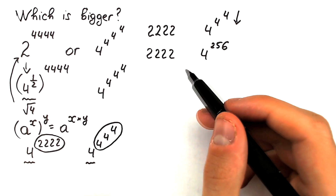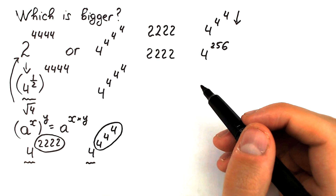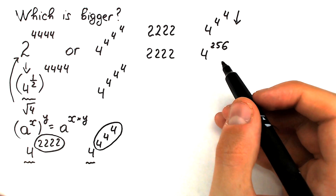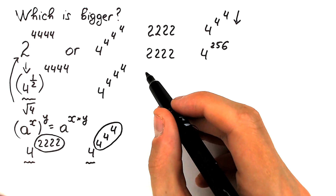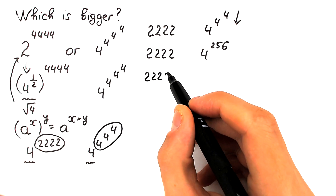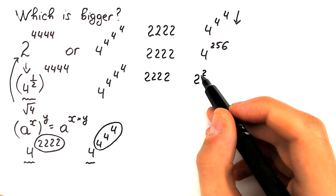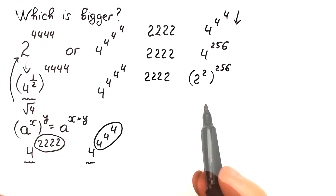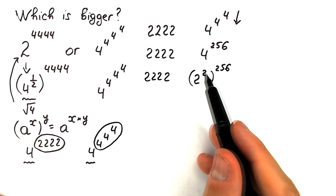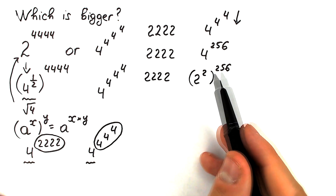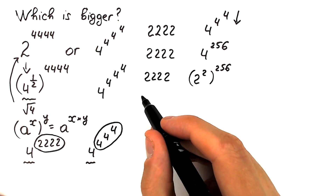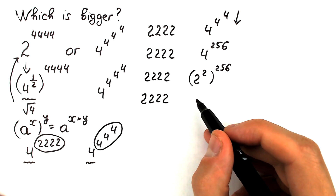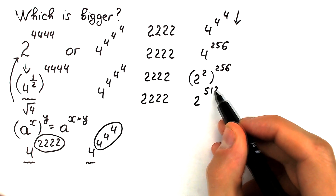Now let's compare 2222 versus 4^256. Since 4 is not a convenient base, let's convert to base 2. We write 4 as 2², so 4^256 becomes (2²)^256 = 2^512. Now we compare 2222 versus 2^512.